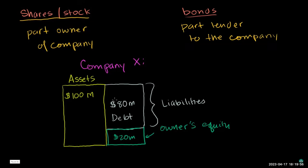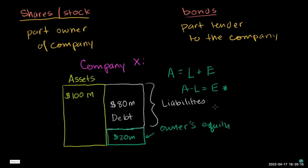Assets are always equal to liabilities plus equity. Or put another way: assets minus liabilities equals equity — what we own minus what we owe. That is what the owners have. When we say I'm a part owner of a company, that means I have a piece of this equity pie. The equity is what I am a part owner of.